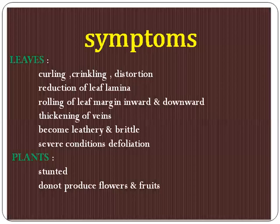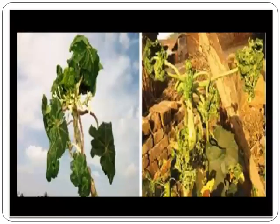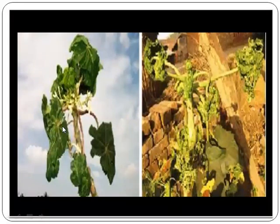When it comes to the whole plant, the total plant is going to be stunted and does not produce flowers and fruits. We can see how these plants become stunted, with curling of the leaves, reduced leaf lamina size, and very thickened veins.